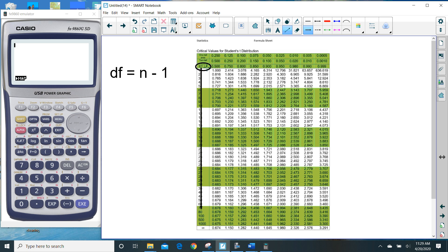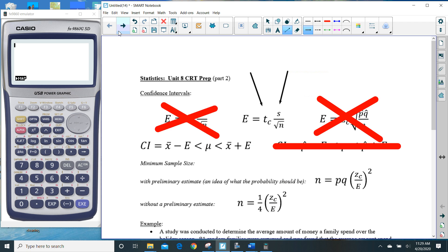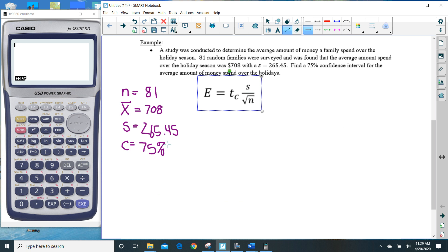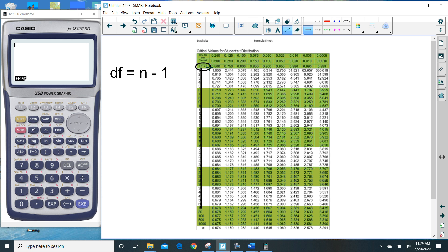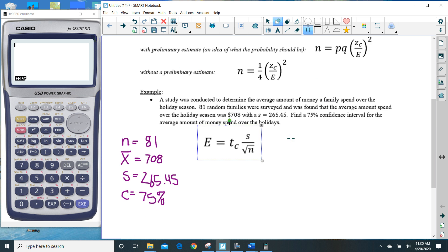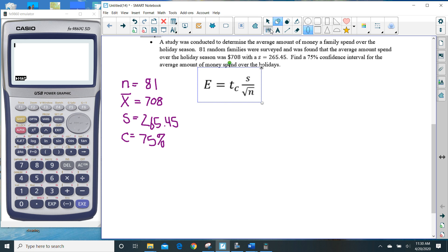The degree of freedom is 80. The C part of that is the confidence that we want, and the confidence that we want is 75%, so 0.75. Where these two things intersect is the T_c that we are after. So that is 1.159.